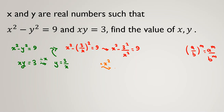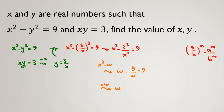To simplify, let's substitute w = x squared as a new variable. The equation becomes w minus 9/w equals 9. Multiplying both sides by w gives w squared minus 9 equals 9w. Moving everything to the left-hand side: w squared minus 9w minus 9 equals 0.